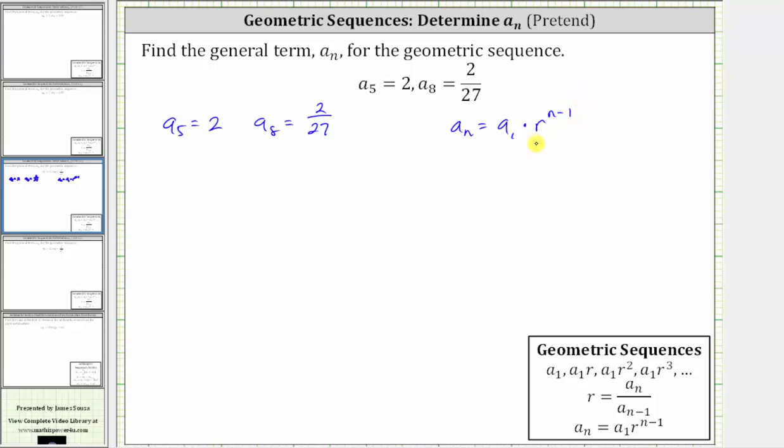In this video, we'll show the method of pretending that a_5 is a_1, which will allow us to determine the common ratio r. So if we pretend that a_5 is a_1, since 5 minus 4 is equal to 1, we can also pretend that a_8 is equal to a_8 minus 4, which would be a_4.